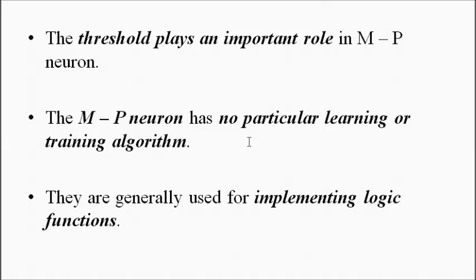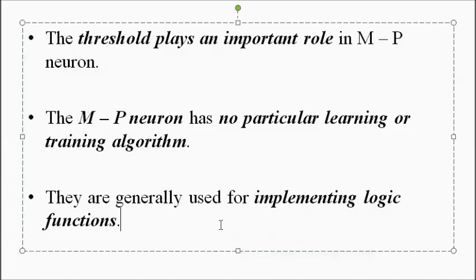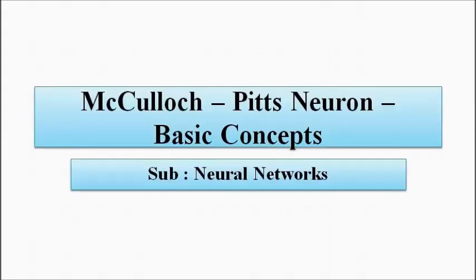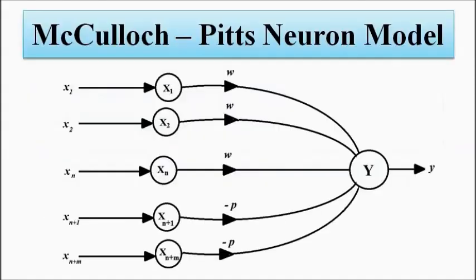Now as I said, it was the earliest, the most simplest of neural network models and was generally used for implementing logic functions. This is all about the McCulloch-Pitts neuron, which is the basic and the most simplest of neural network models.